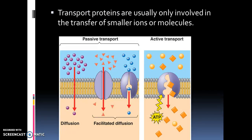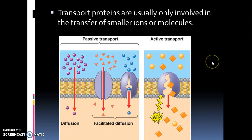Transport proteins are usually only involved in the transfer of smaller ions or molecules. So to summarize, we have diffusion, facilitated diffusion, and active transport — which moves molecules against the concentration gradient.